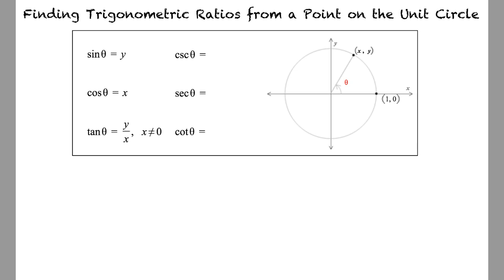But what about the rest of the values? The values of the other three are the multiplicative inverses of the first three. Sine corresponds to cosecant, cosine to secant, and tangent to cotangent. This means that cosecant is equal to 1 over y, secant is equal to 1 over x, and cotangent is equal to x over y.